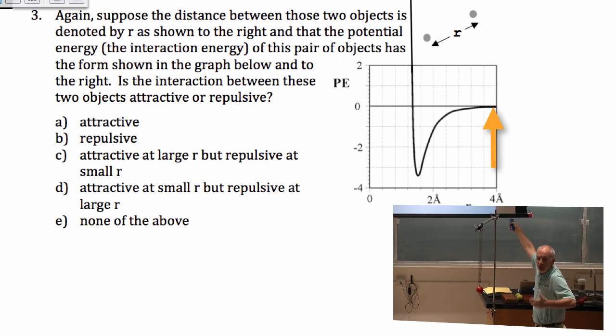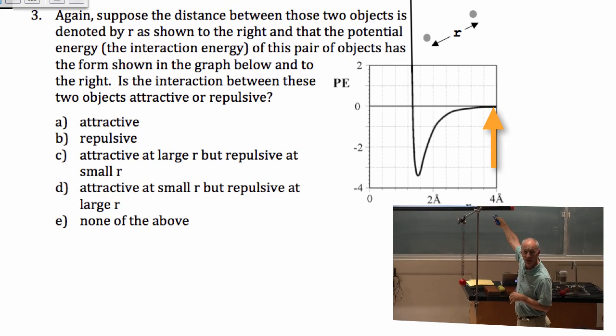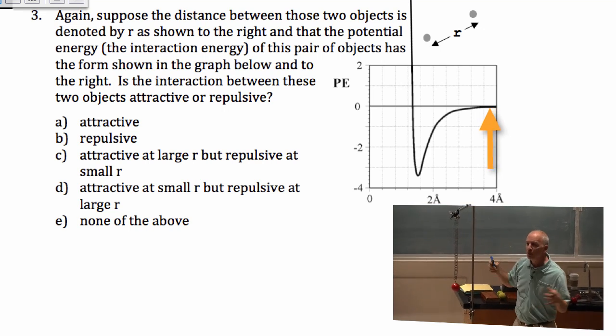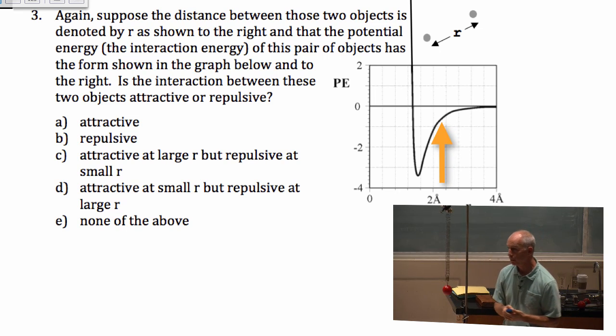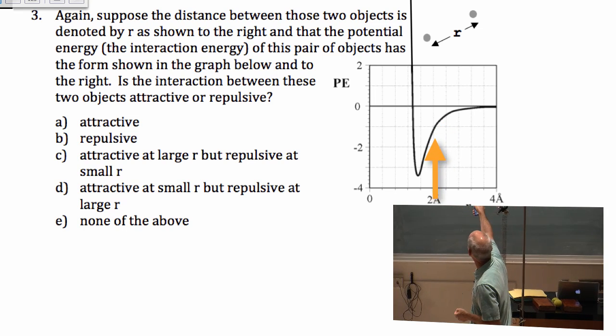It's small, it's close to zero. There's almost no force attracting them out here. The slope gets bigger and bigger, so the force, attractive force gets stronger and stronger. The attractive force gets stronger and stronger.